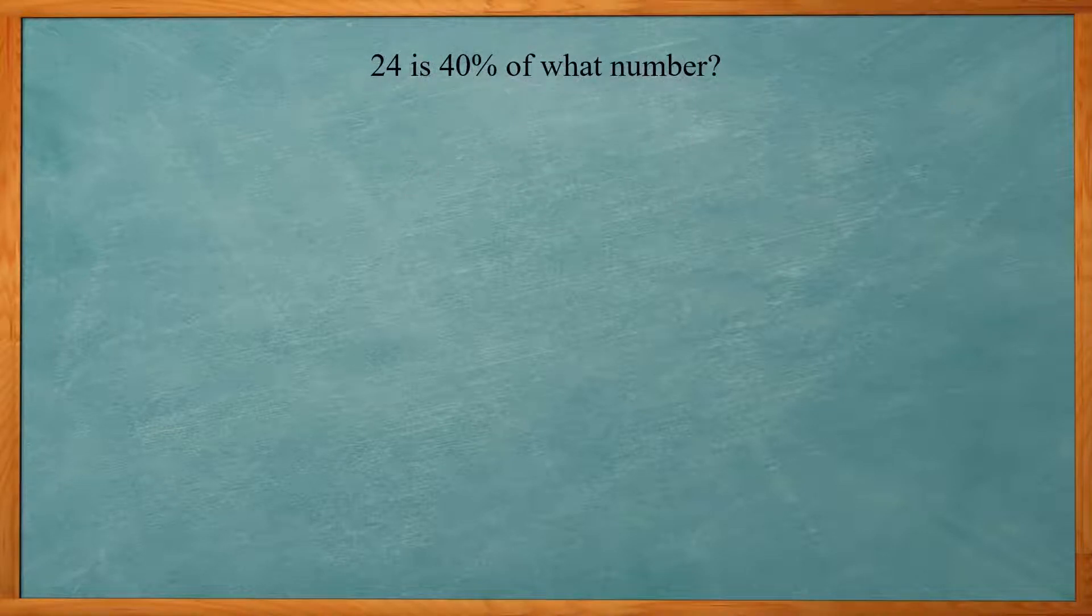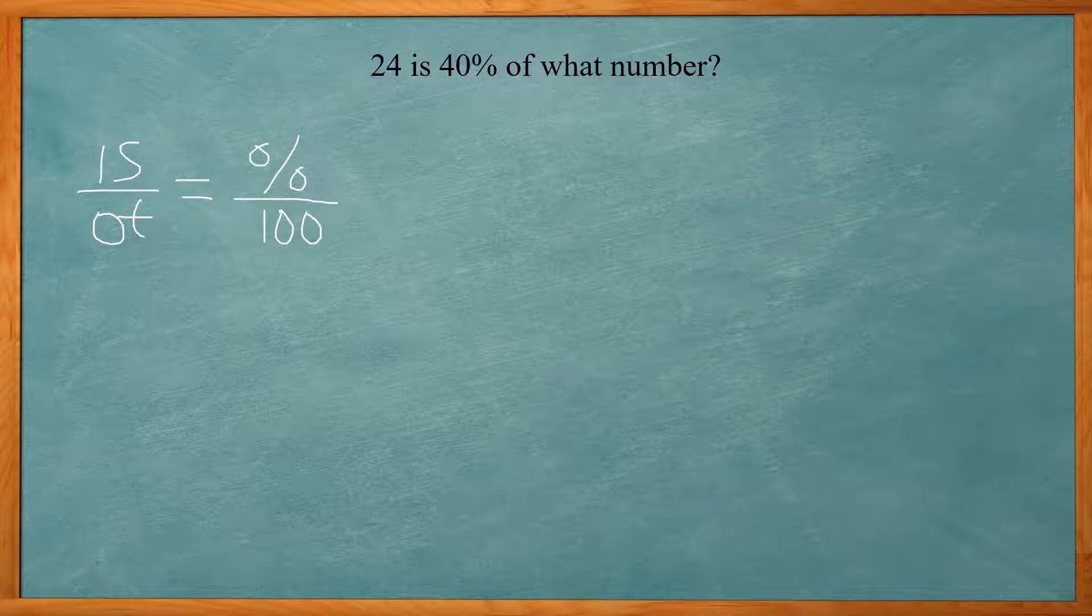So this one says 24 is 40% of what number? So for these type of problems, I like to set up this little proportion. So it's is over of equal to the percent over 100. So this says 24 is, so our is goes on top.